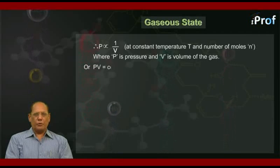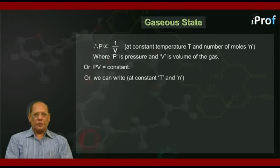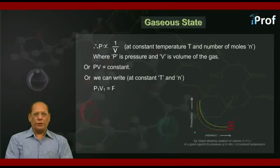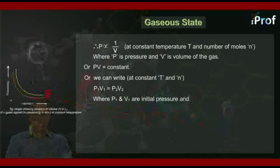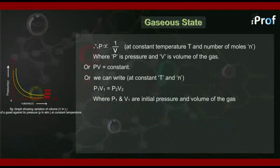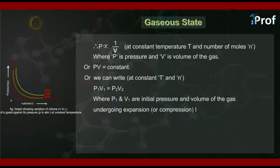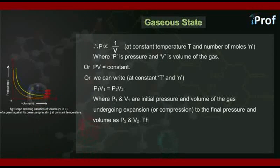Or PV equal to constant. Or we can write at constant T and n, P1V1 equal to P2V2. Where P1 and V1 are initial pressure and volume of the gas undergoing expansion or compression to the final pressure and volume as P2 and V2.